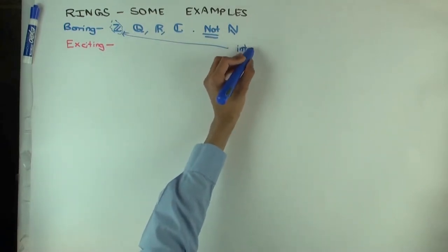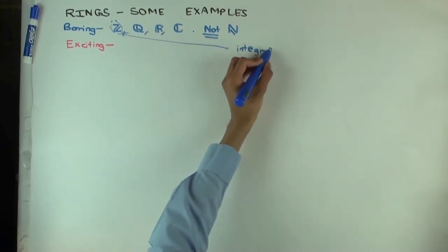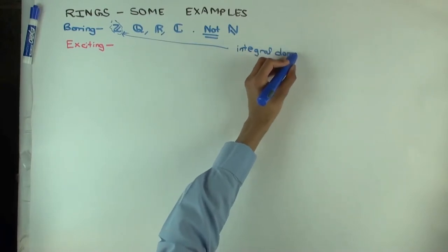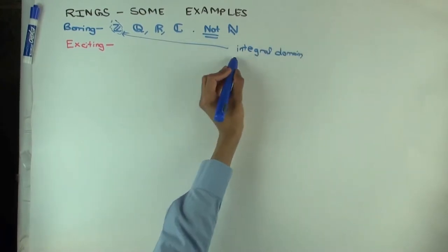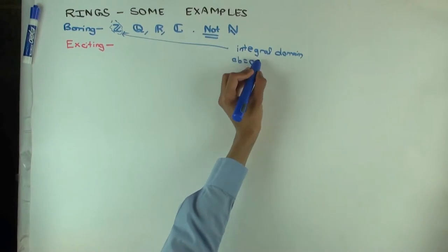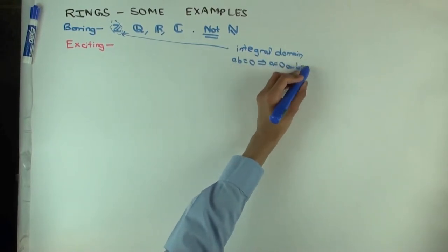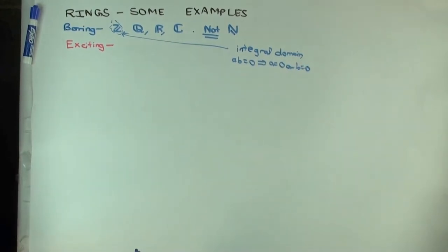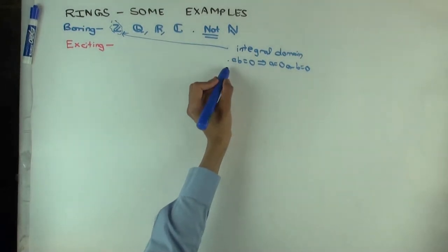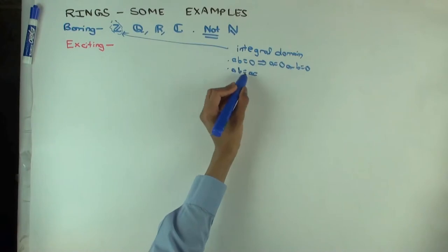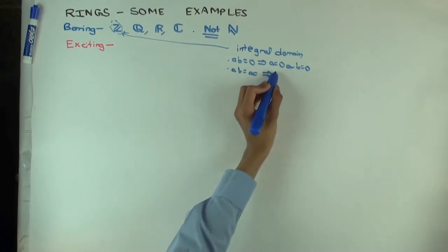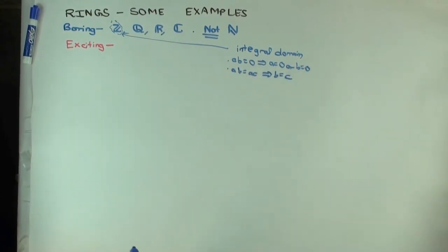Why is it an integral domain? What does it mean to be an integral domain? There are two ways to define integral domain. One is to say that whenever the product of two things is zero, then at least one of the pieces is zero. That's true for integers — whenever the product of two integers is zero, one of them is zero. The other equivalent definition says that whenever ab equals ac, then b equals c, so you can cancel anything multiplicatively.